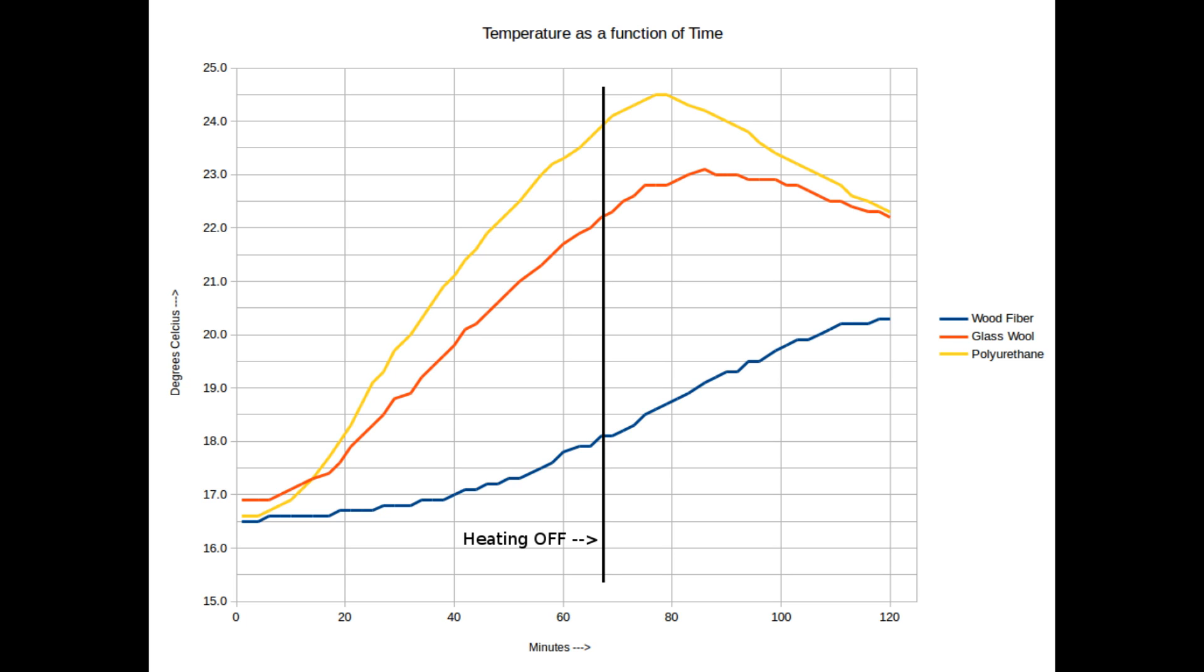In polyurethane, it keeps going up for about five minutes and then the temperature curve goes down. And actually the temperature in the polyurethane house quickly follows the outside temperature. With glass wool also, after five to ten minutes, the glass wool curve goes down. But the temperature in the wood fiber house keeps going up and up and up.